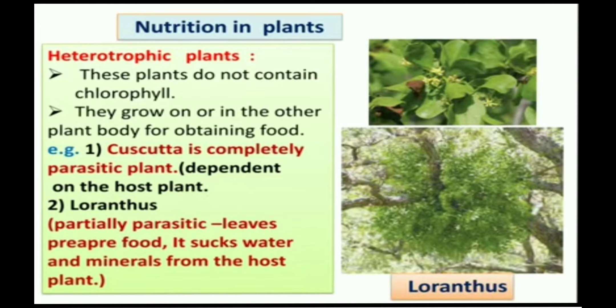The next example is loranthus. Loranthus is partially parasitic. Its leaves can prepare food because loranthus leaves are green in color and can perform photosynthesis. However, loranthus sucks water and minerals from the host plant on which it grows. That is why it is called partially parasitic.